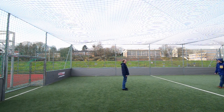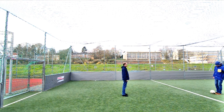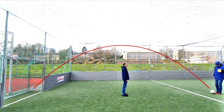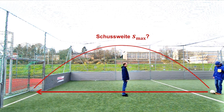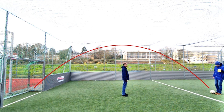Kommen wir wieder zurück zum Beispiel des Fußballers. Ihr seht uns hier, wie wir auf dem Sportplatz stehen und ich versuche, den Ball über Stefan als äußerst effektive Ein-Mann-Mauer zu lupfen. Dabei interessiert mich vor allem, wie weit ich mit meinem Schuss komme, damit der Ball rechtzeitig vor dem Tor wieder runterkommt – also die maximale Schussweite S_max. Die andere Frage ist, wie hoch ich mit meinem Schuss komme, damit ich den Ball über Stefan rüber lupfen kann – also die maximale Schusshöhe h_max.